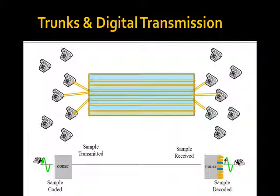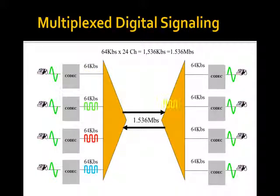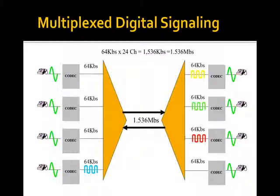This was a stepping stone towards solving the other part of the problem — we need to move more calls over less cable. To do that, we insert a device called a multiplexer. I would put a bunch of codecs together — remember, they're taking analog audio and making 8-bit samples. What the multiplexer does is take an 8-bit sample from each of its input codecs in turn and just stack them up. It sends them across the line. The multiplexer does add framing — a little bit of overhead. The lowest level of this scheme is called T1; it has 24 voice channels.